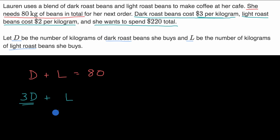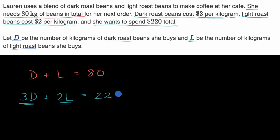She buys L kilograms of light roast beans, and they cost $2 per kilogram — so $2 per kilogram times the number of kilograms is how much she spends on light roast beans. You add how much she spends on dark roast to how much she spends on light roast, and this is going to be $220 in total. And there you have it — we have our two equations with two unknowns, and now we could go and solve it.